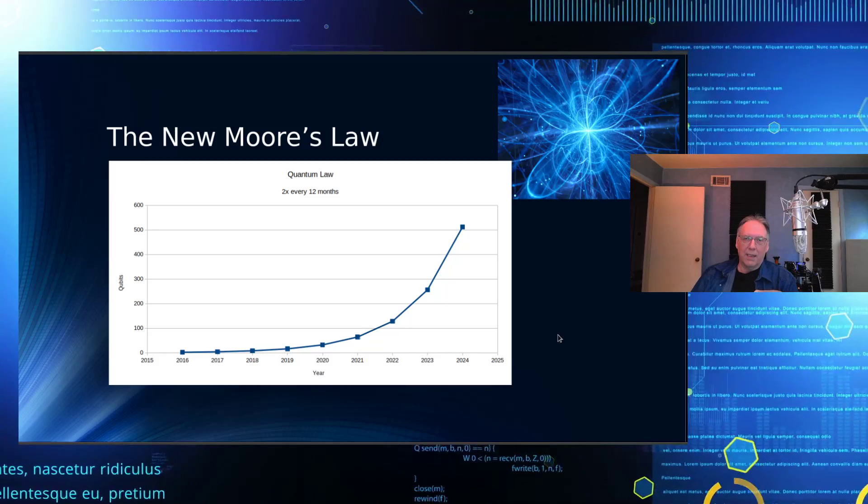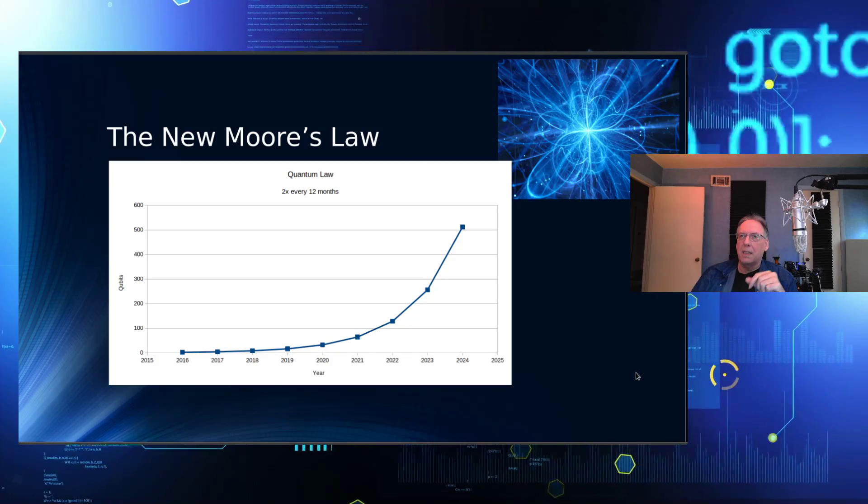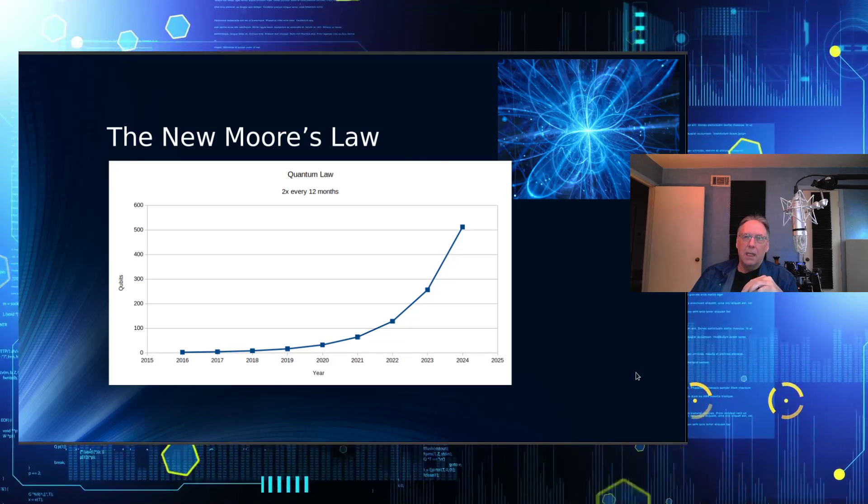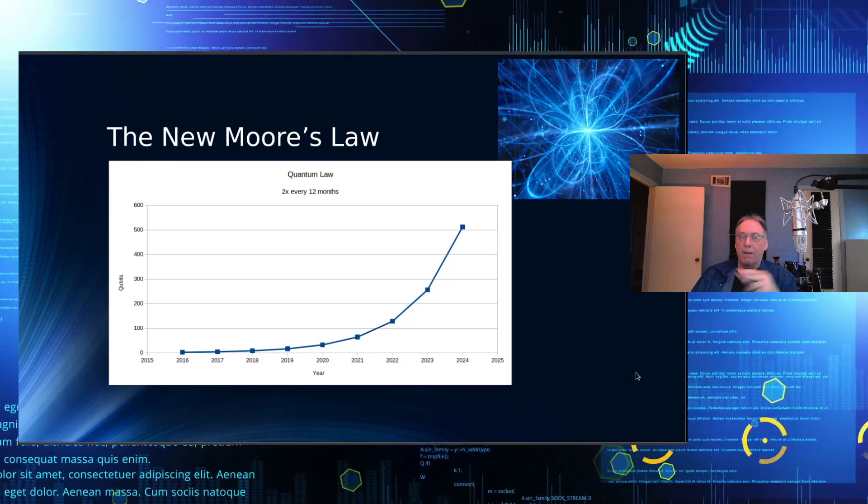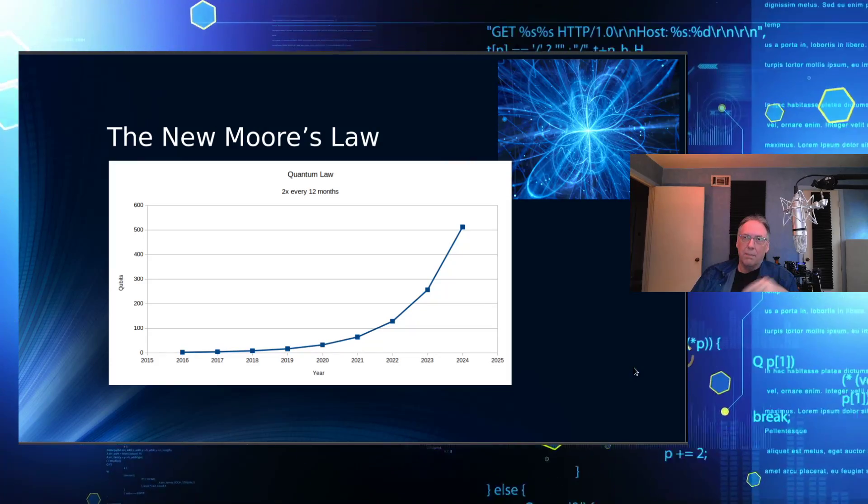So the new Moore's law is this, and that's currently happening over time is that the number of qubits are doubling. And of course, that has an exponential effect on the number of states that we talked about earlier.